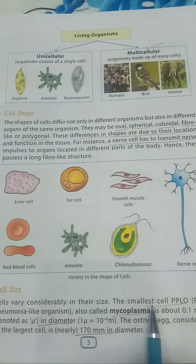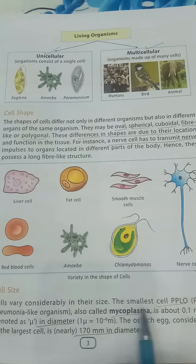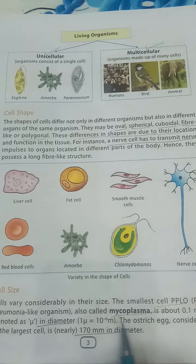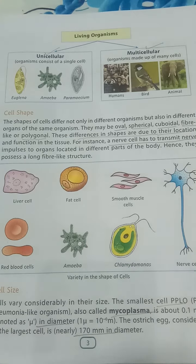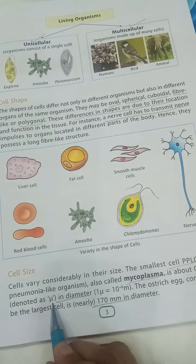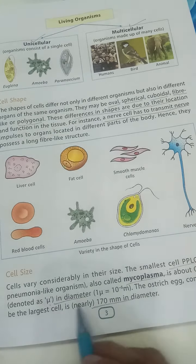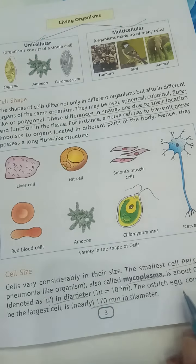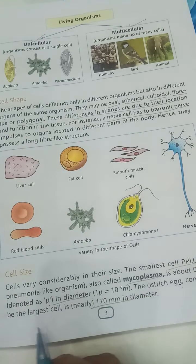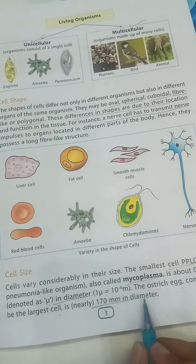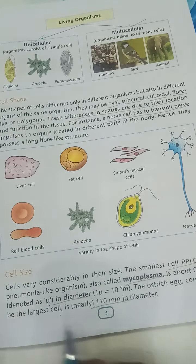The smallest cell in our atmosphere is Mycoplasma, also known as PPLO (Pleuropneumonia-Like Organism). Its size is 0.1 micron, denoted by the symbol μ, where one micron equals 10 to the power of minus 6 meters. The largest cell is the ostrich egg, which has a diameter of 170 millimeters.